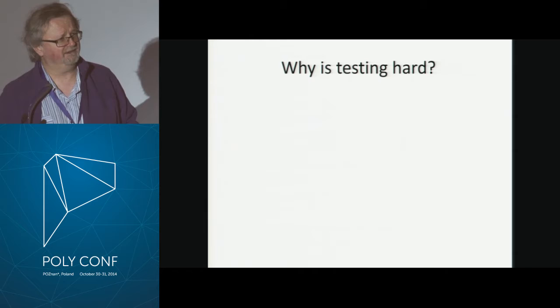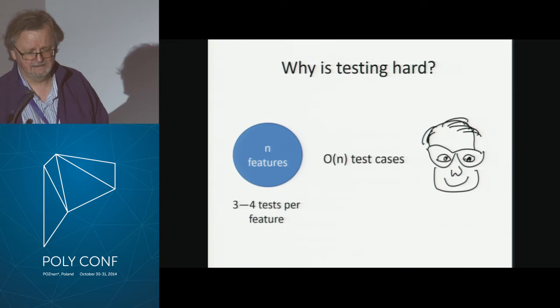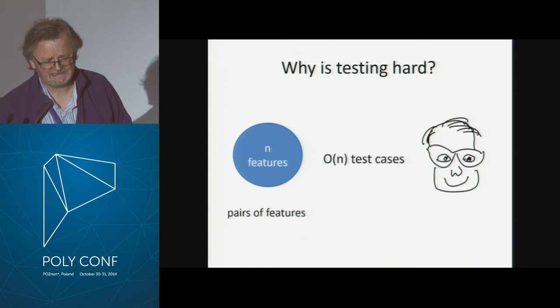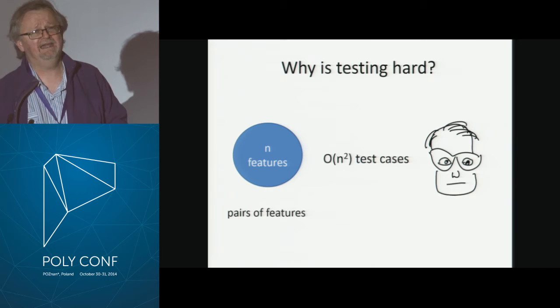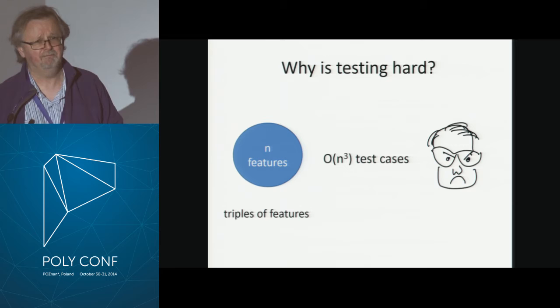Why is testing hard? Suppose you've got N features that you want to write tests for. You're going to write three or four tests per feature — that's a linear amount of work, no problem. But we all know that if you test features in isolation, you won't find all your bugs. Some bugs only appear when you test two features together, so maybe we should test pairs of features. That's a quadratic amount of work. But even then, some bugs only appear when you use three things together — that's a cubic amount of work.